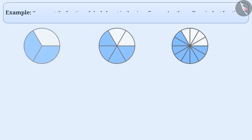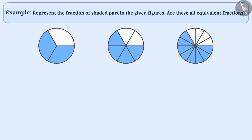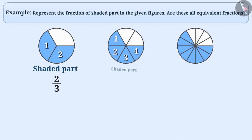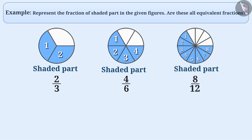Next example: Represent the fraction of the shaded part in the given figures. Are all these equivalent fractions? In the first figure, there are three equal parts, two of which are shaded, giving a fraction of two by three. In the second figure, four out of six parts are shaded, giving four by six. In the third figure, eight out of twelve parts are shaded, giving eight by twelve.